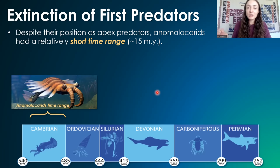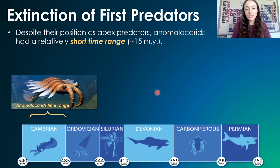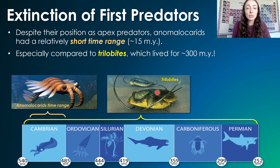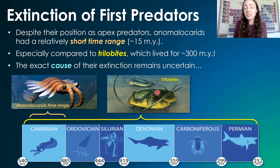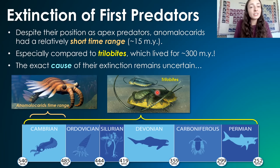Despite their huge role in early ecosystems and their incredible impact on later ecosystems, they only had a short time range — around 15 million years — which compared to the 300 million years that trilobites lived seems really tiny. But it's not like anomalocaridids weren't successful. So what exactly caused them to go extinct while other arthropods like trilobites just kept diversifying?